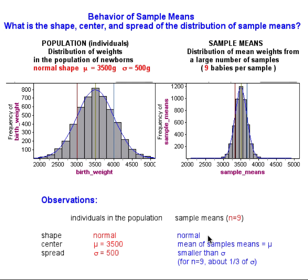We observed that the distribution of sample means was also normal and that the mean of the sample means was equal to the parameter value of 3,500. We also saw that the standard deviation was much smaller. For samples of size 9, the standard deviation of sample means was about a third of the population standard deviation.